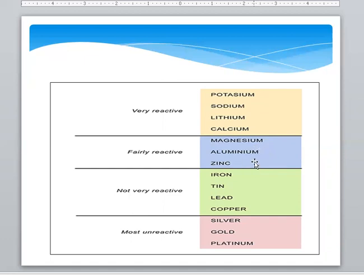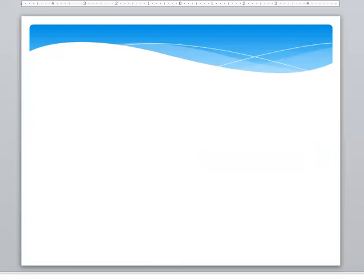Not very reactive: iron, tin, lead, and copper. Inert metals or most unreactive metals are silver, gold, and platinum. Thank you.